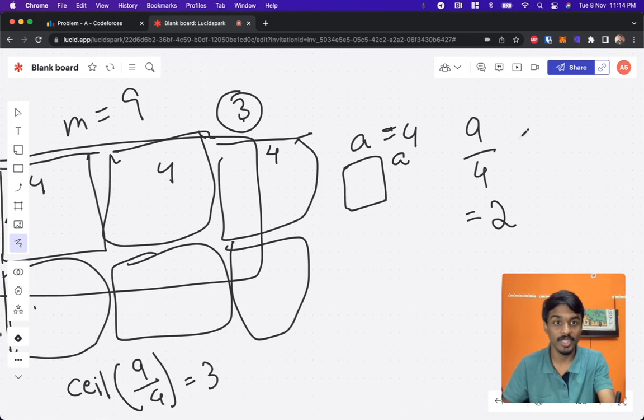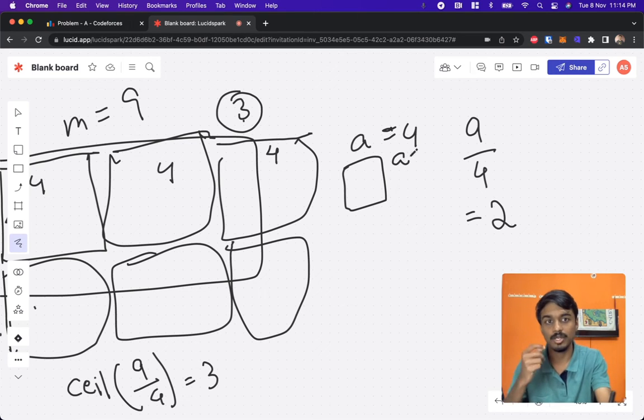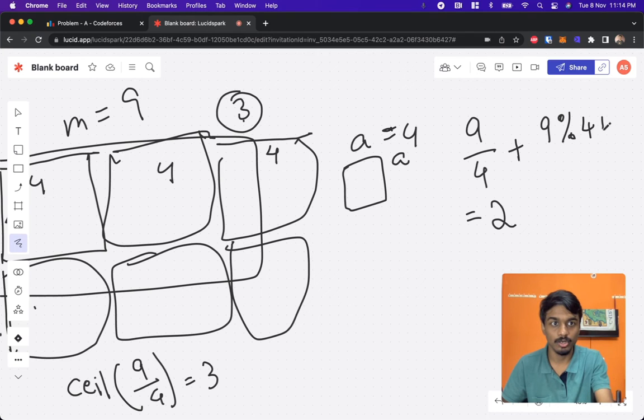But we see that 9 by 4 is not 2, it is 2 point something. So if there is a decimal value or if it is not a perfect multiple, you simply have to do 9 mod 4 not equal to zero. So this is also a ceil function but in integer.